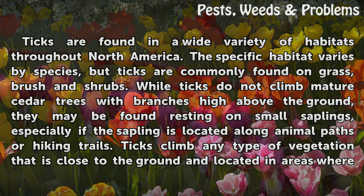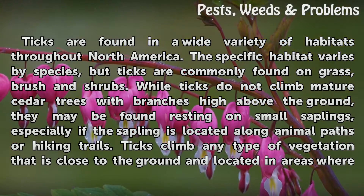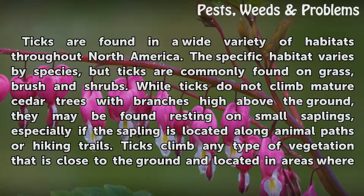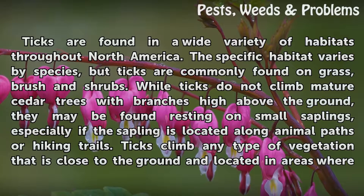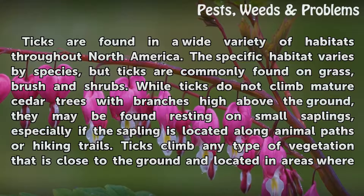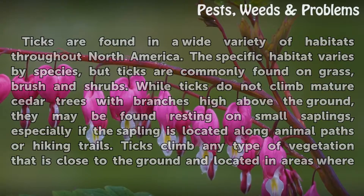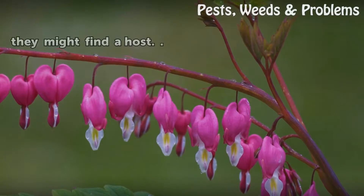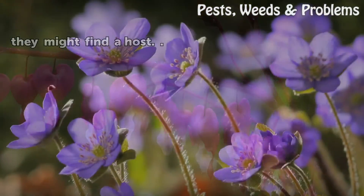Ticks are found in a wide variety of habitats throughout North America. The specific habitat varies by species, but ticks are commonly found on grass, brush, and shrubs. While ticks do not climb mature cedar trees with branches high above the ground, they may be found resting on small saplings, especially if the sapling is located along animal paths or hiking trails. Ticks climb any type of vegetation that is close to the ground and located in areas where they might find a host.